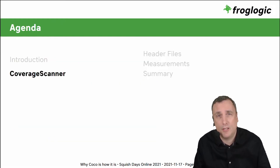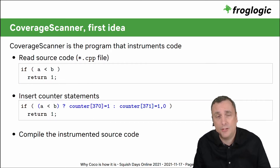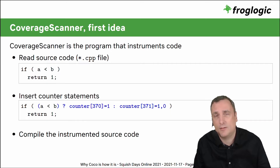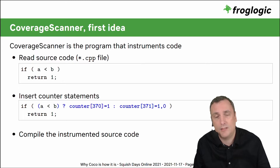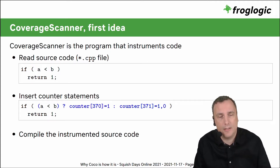The tool that handles this is called Coverage Scanner. It reads each CPP source file and applies instrumentation. For example, an if statement is instrumented not on the statement itself but on its condition expression — the A less-than-B expression is instrumented using the C/C++ ternary operator to determine whether it evaluated to true or false. Care is taken not to modify application behavior, preserving the original boolean return values.